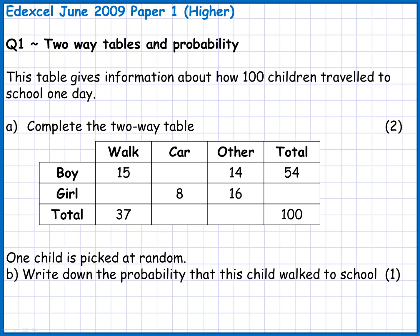This is just simple arithmetic — adding and subtracting — and problem solving to find the missing numbers. There are lots of different ways to go about this; you're just looking for blanks you can fill in easily. I'm going to start with the total column. I've got 54 boys and need to get to 100, so taking 54 away from 100 gives me 46 girls.